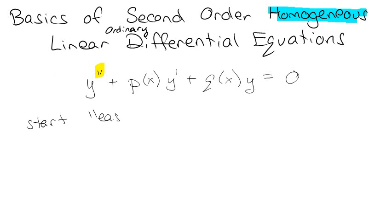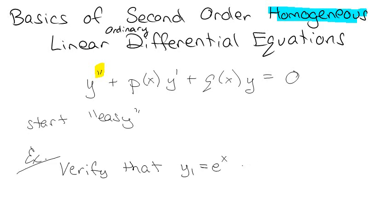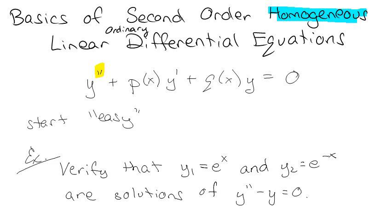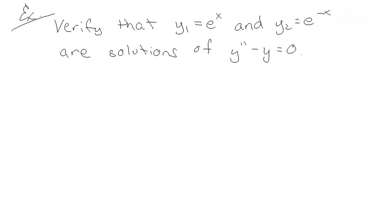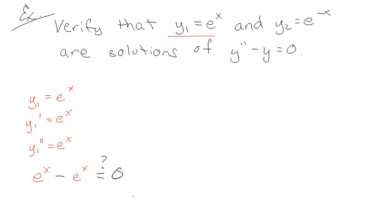We're going to start with an example. Verify that y₁ = eˣ and y₂ = e^(−x) are solutions of y'' − y = 0. So we'll verify the first one: y₁ = eˣ, y₁' = eˣ, y₁'' = eˣ. We want to make sure it's a solution, so we plug into y'' − y = 0: eˣ − eˣ equals zero. And yes, it does! Verified.